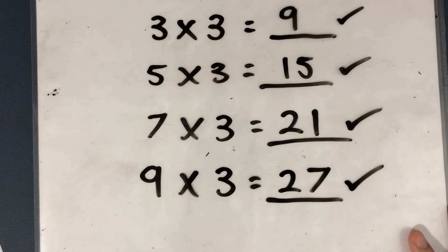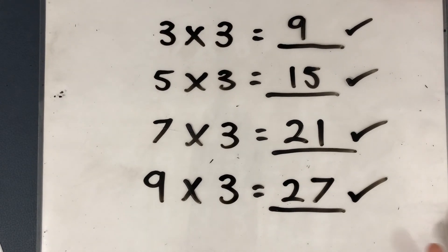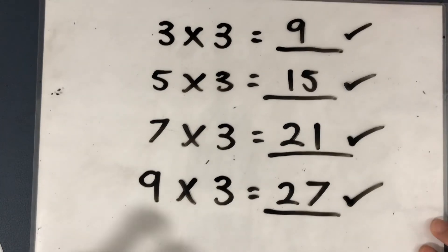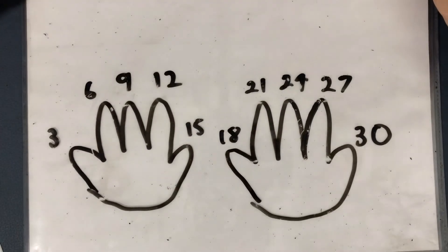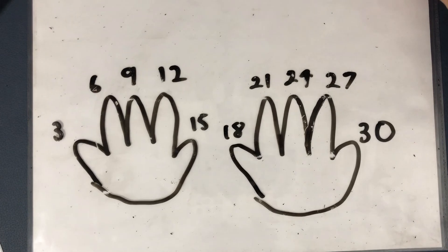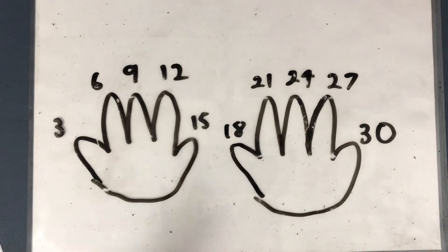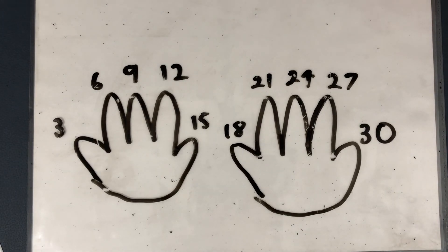If you got all 4 questions correct, well done. If you did not get it correct, don't worry, just keep practicing. Follow this diagram over and over again until it becomes as easy as the 2, 5, and 10 times table that you have done before. I'll see you in the next video for your worksheet.